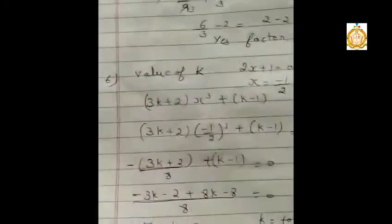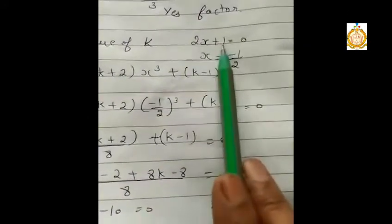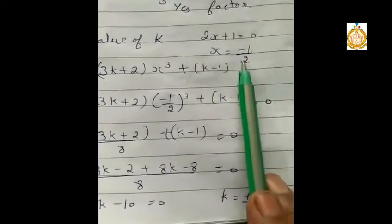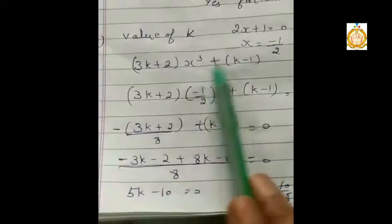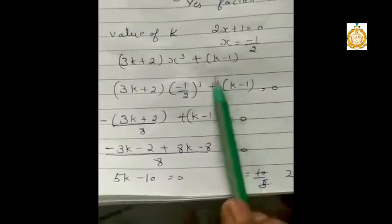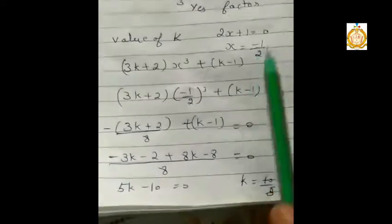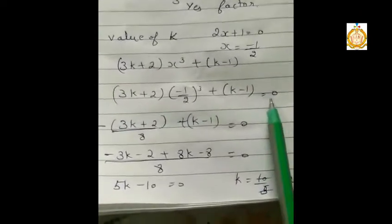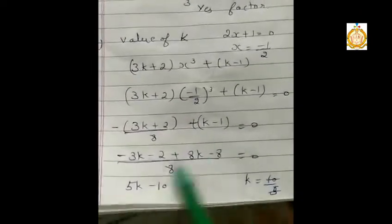Next, in some sums we have to find the value of c, value of k, value of x, and value of a. How to do it? Again, I set the linear value equal to 0 and find x, which becomes minus 1 upon 2. This value of x I put into the next expression — x cube, that is minus 1 upon 2, cubed. Because it is given as a factor, the remainder must equal 0. Then I do the calculation and find the value of k, which becomes 2.